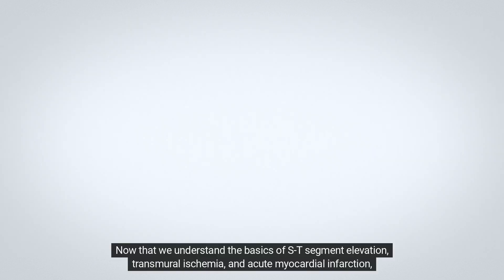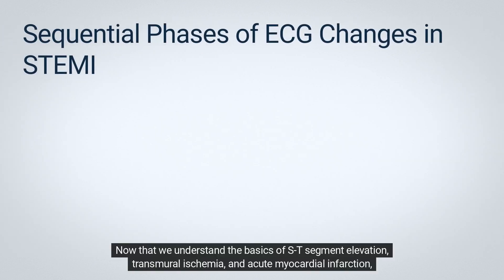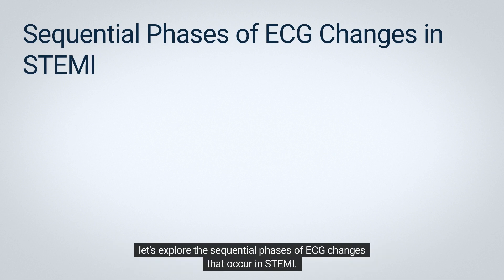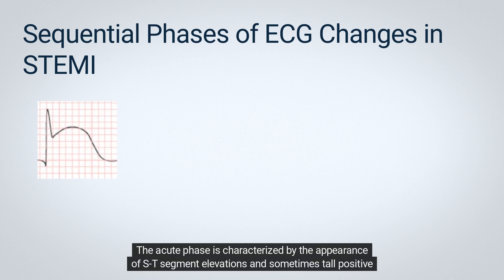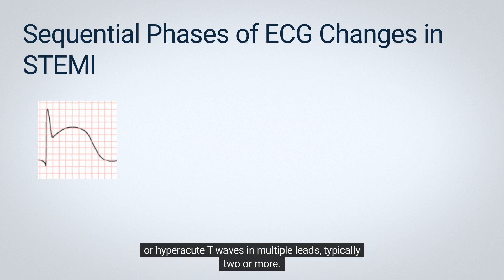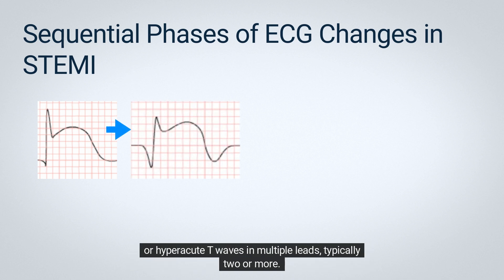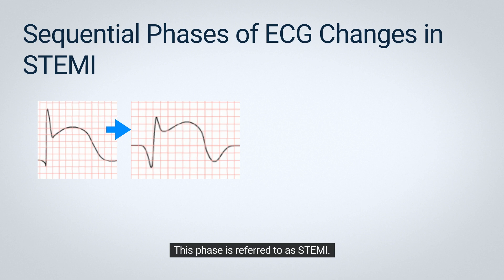Now that we understand the basics of ST-segment elevation, transmural ischemia, and acute myocardial infarction, let's explore the sequential phases of ECG changes that occur in STEMI. There are two main phases. The acute phase is characterized by the appearance of ST-segment elevations and sometimes tall, positive, or hyperacute T waves in multiple leads, typically two or more. This phase is referred to as STEMI.